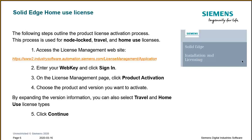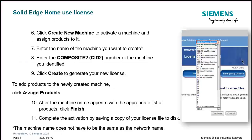On the license management page, you click Product Activation. You choose the product and version you want to activate, since you might have different options. By expanding the version information, you can select which type of license you want — in this case, you select Home Use license type, then click Continue. The system gives you the option to create a new machine, activate that machine, and assign the product you chose to it. You can enter the name of the machine — it doesn't have to match the network name. Then you enter the Composite 2 CID number for that machine, and click Create to generate your new license.